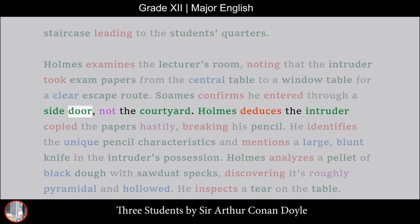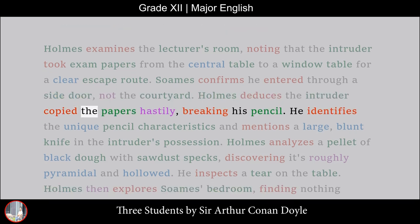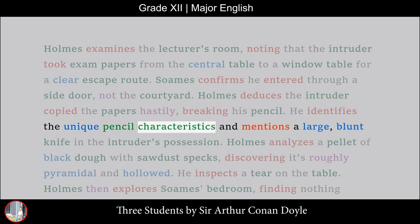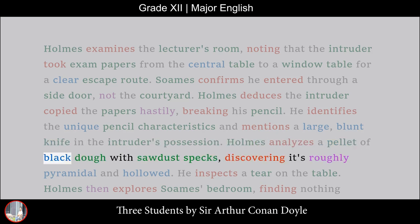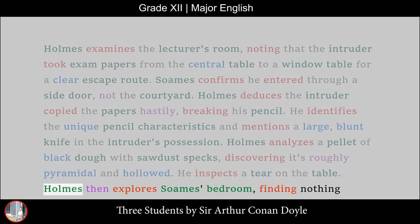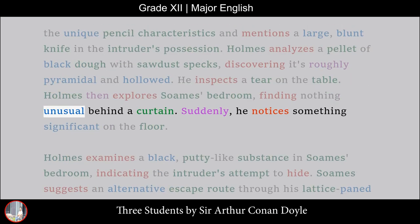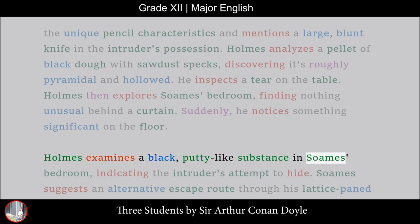Soames confirms he entered through a side door, not the courtyard. Holmes deduces the intruder copied the papers hastily, breaking his pencil. He identifies the unique pencil characteristics and mentions a large, blunt knife in the intruder's possession. Holmes analyzes a pellet of black dough with sawdust specks, discovering it's roughly pyramidal and hollowed. He inspects a tear on the table, then explores Soames' bedroom, finding nothing unusual behind a curtain. Suddenly, he notices something significant on the floor — a black, putty-like substance in Soames' bedroom, indicating the intruder's attempt to hide.